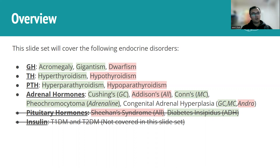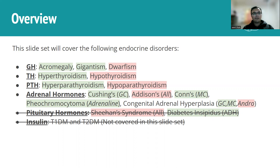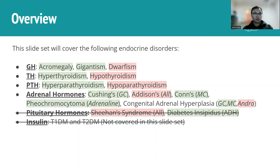When it comes to endocrine disorders, we're talking about imbalances in different hormones. We'll look at growth hormone — excess causing either acromegaly or gigantism depending on when it occurs, and deficiency causing dwarfism. The page here highlights all the different hormones we'll be covering, and what conditions result from an excess or deficiency of each.